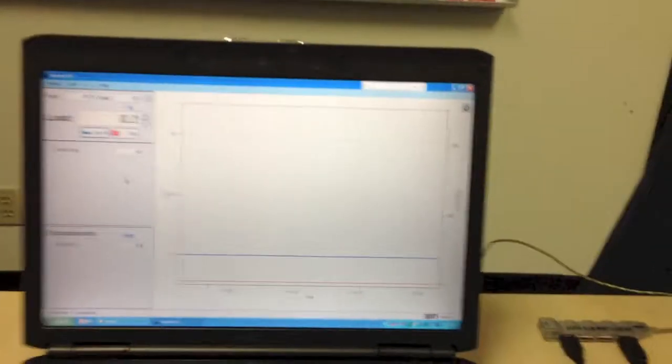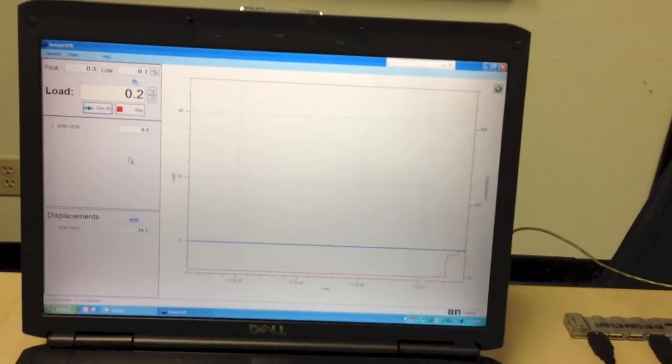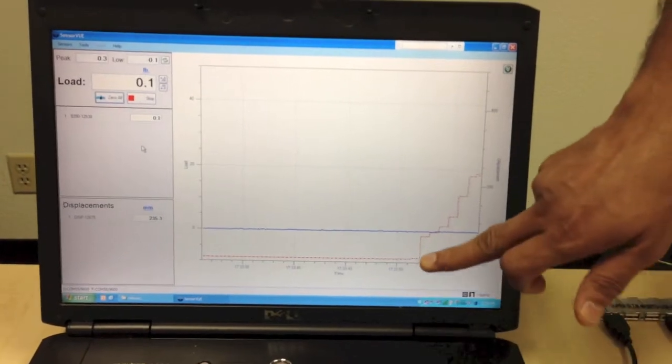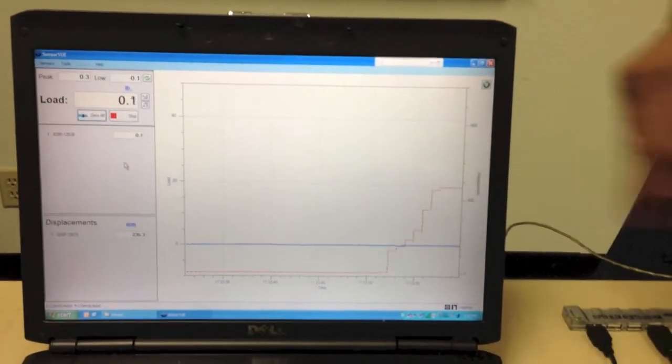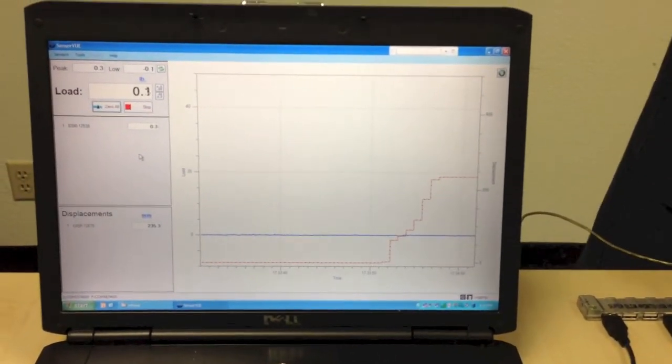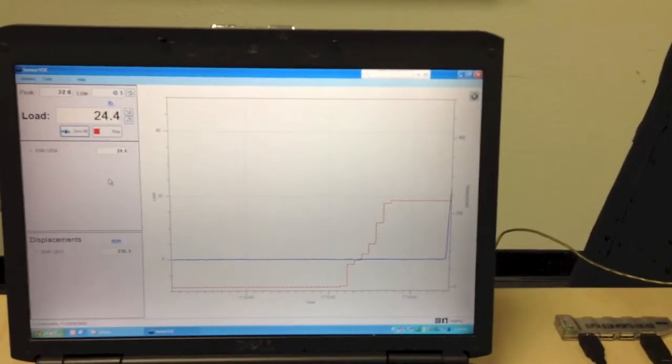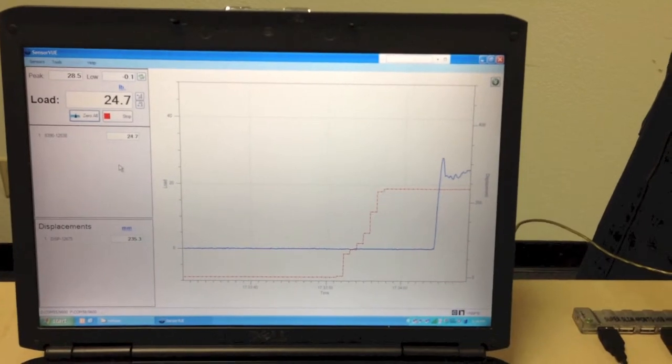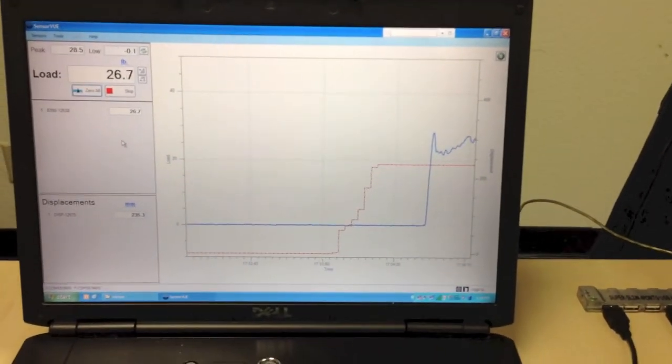So when I move the displacement sensor, you can see in red that I'm going and pulling out. So it's showing me how much I have displaced the sensor. And if I apply force, you can see the force being applied as well. So you can get both force and displacement simultaneously.